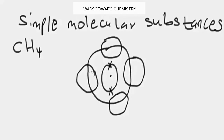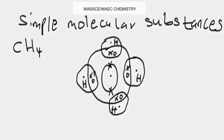The carbon atom is sharing pairs of electrons with each hydrogen atom. This is the first pair, the second pair, the third pair, and the fourth pair. The center of the diagram is for carbon — you can label this your carbon atom. This is the dot-and-cross diagram of methane gas, which forms four covalent bonds with hydrogen atoms to fill up its outer shell.